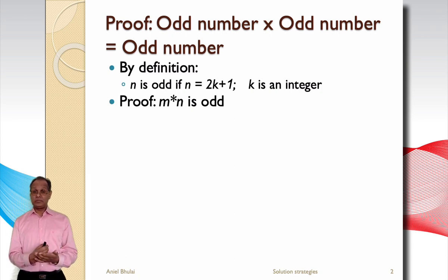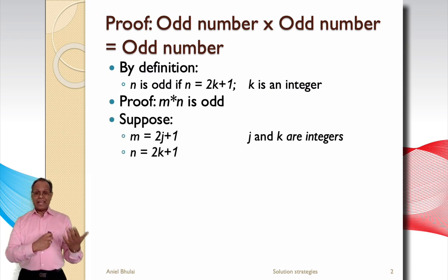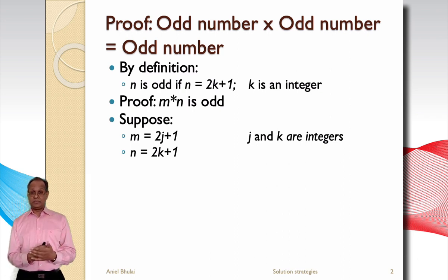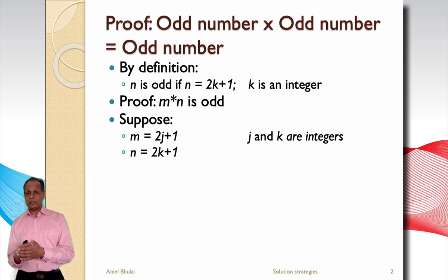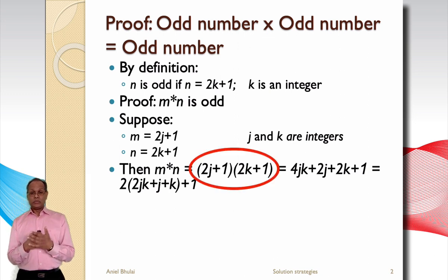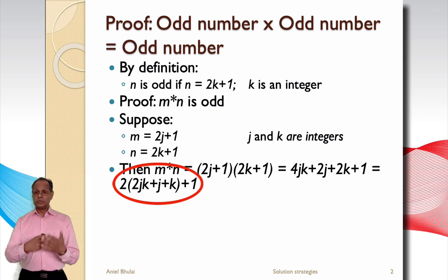We want to prove that if m and n are odd, the multiplication m times n is odd. Now suppose m and n are odd numbers. Then following the definition we can say that m equals 2j plus 1 and n equals 2k plus 1 for some integers j and k. So m times n equals (2j + 1)(2k + 1), which equals 2 times